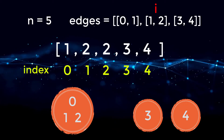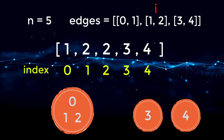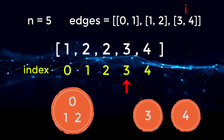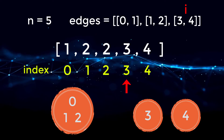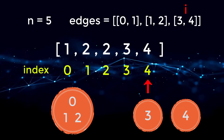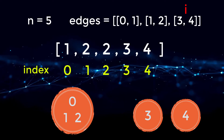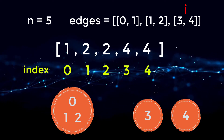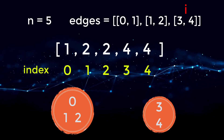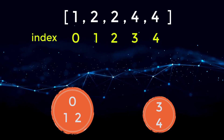By assigning one's parent to two, we've combined the zero-one subset with the two subset, so now zero, one, and two are part of one subset. Finally, we go to edge three-four. Three's parent is three, pointing to itself, and four's parent is four, also pointing to itself. We assign three's parent to be four, combining subset three and subset four into one subset of three and four.